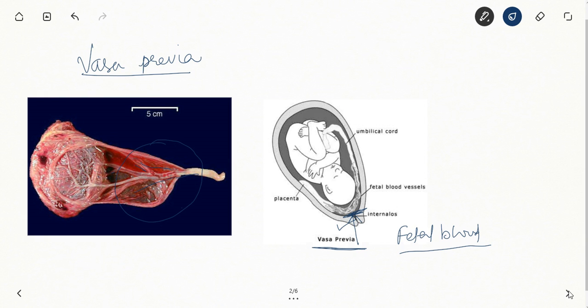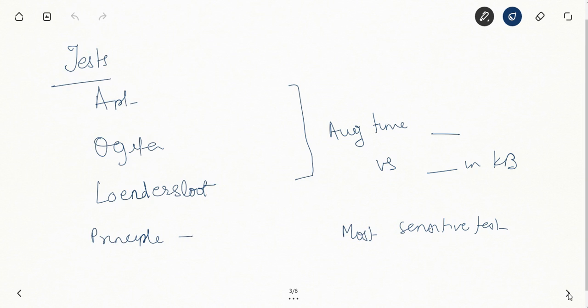So you don't need to look into the microscope and decide. You need tests which will be quick. These tests which are available are apt test, ogita, and lendersLoot. All these tests, the average time they take is five minutes versus 45 minutes time taken in Kleihauer-Betke test.